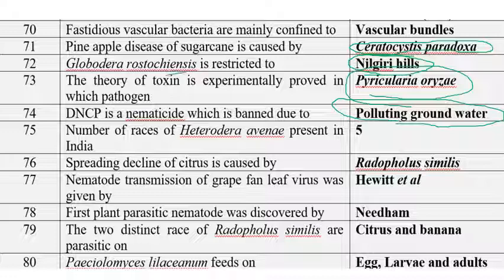Spreading decline of citrus is caused by Radopholus similis. There are three types of declines in citrus: slow decline, spreading decline, and quick decline. Spreading decline is due to Radopholus similis, quick decline is due to citrus tristeza virus, and slow decline is due to Tylenchulus semipenetrans.